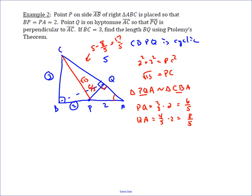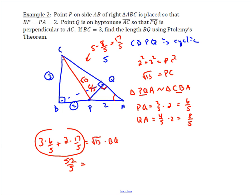CQ is just 5 minus 8/5, which equals 17/5. Now we know five of the six lengths needed for Ptolemy's theorem. Applying it: opposite sides give 3 × (6/5) + 2 × (17/5) equals the product of the diagonals, which are √13 and BQ. That gives 18/5 + 34/5 = 52/5 = √13 × BQ.